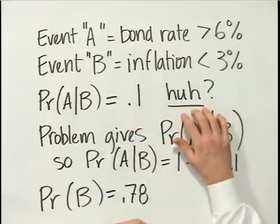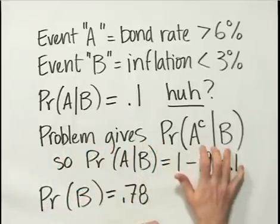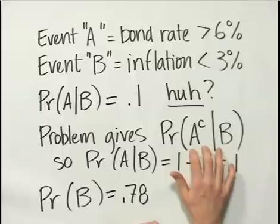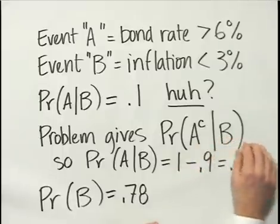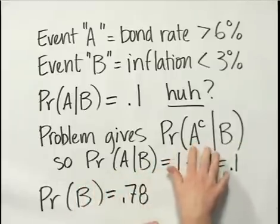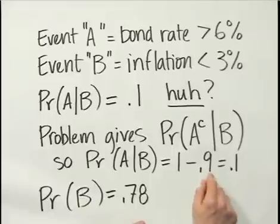You might be saying: didn't you give me the conditional probability as 0.9? Yes, but the problem gave us the probability of A complement given B — the probability that bond rates would be below 6% given that inflation was below 3%. We can always find the probability of A given B if we have the probability of A complement given B, because it's just 1 minus the probability of A complement given B. So I took 1 minus 0.9 to get 0.1.